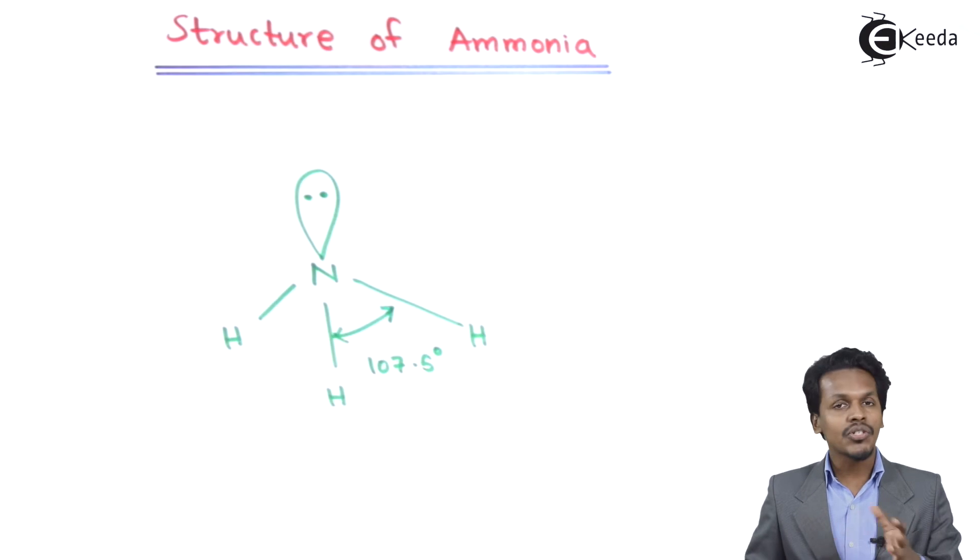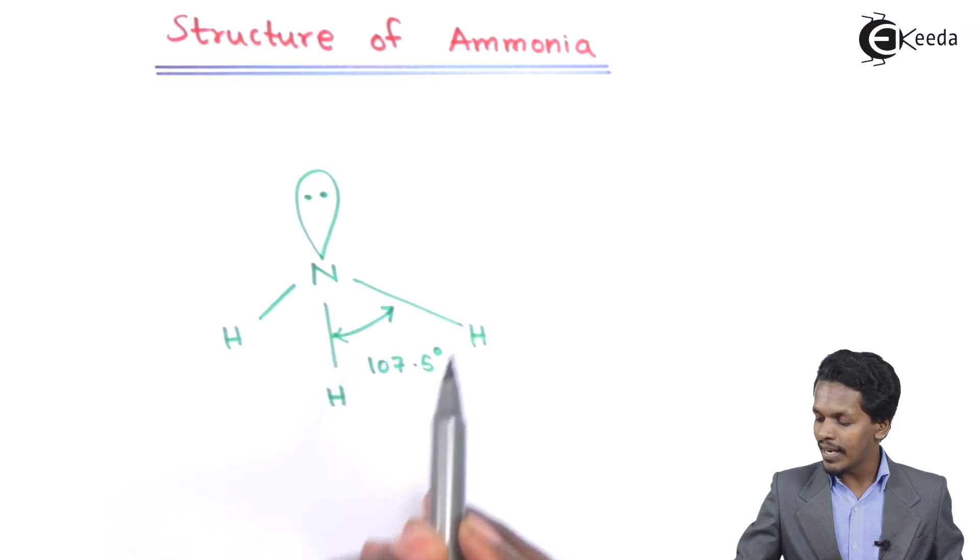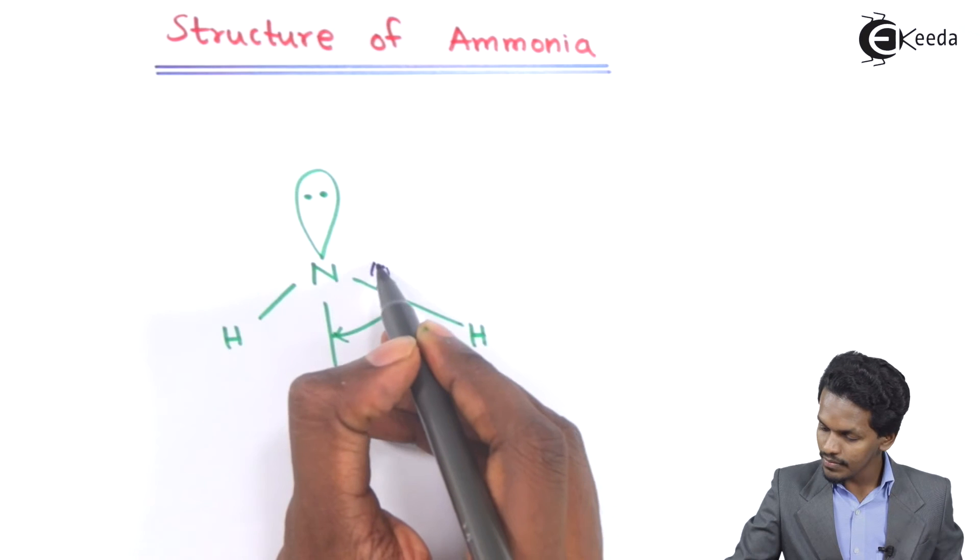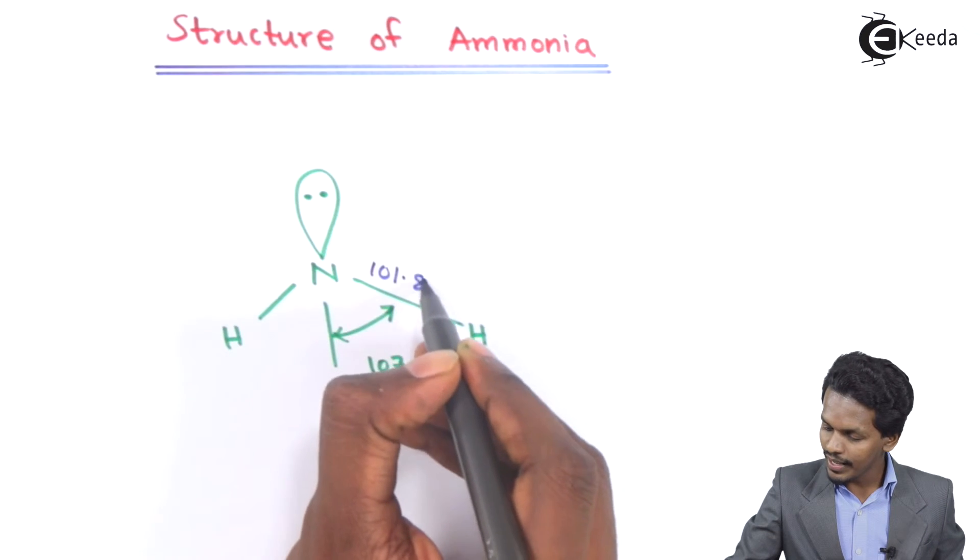So therefore this is the structure of ammonia that is basically tetrahedral shape or that is what we could call it as pyramidal shape. And the geometry is basically pyramidal and now let me talk about the bond length between this nitrogen and this hydrogen. So therefore the bond length between the nitrogen and hydrogen has been found to be 101.8 picometers.